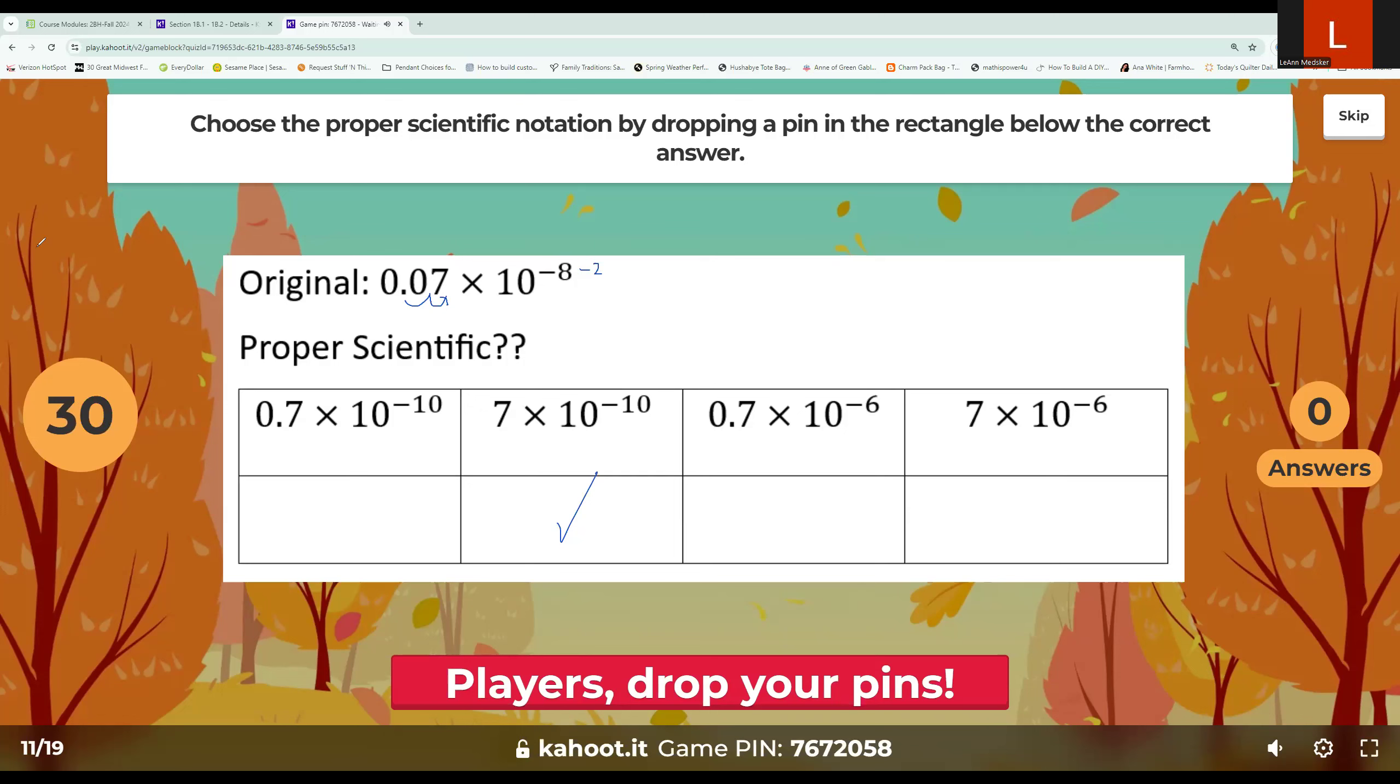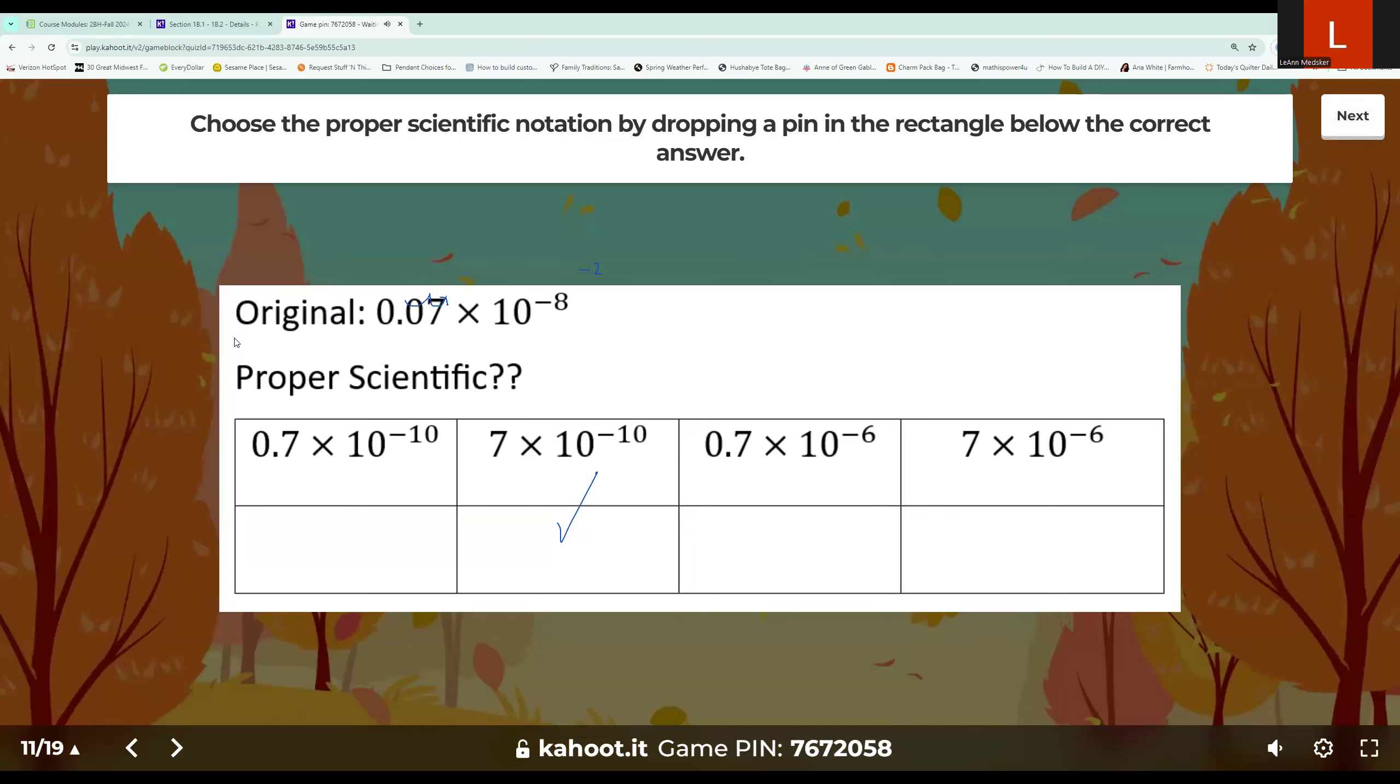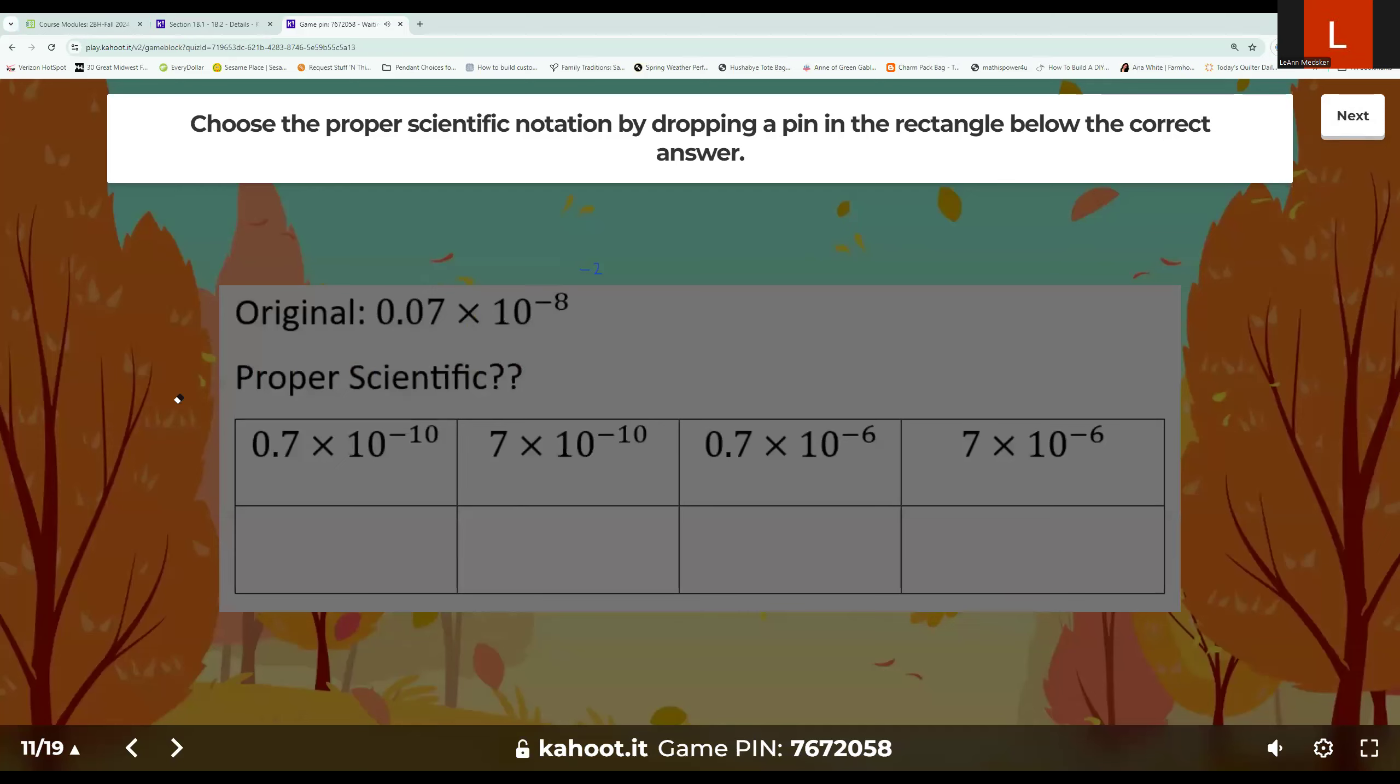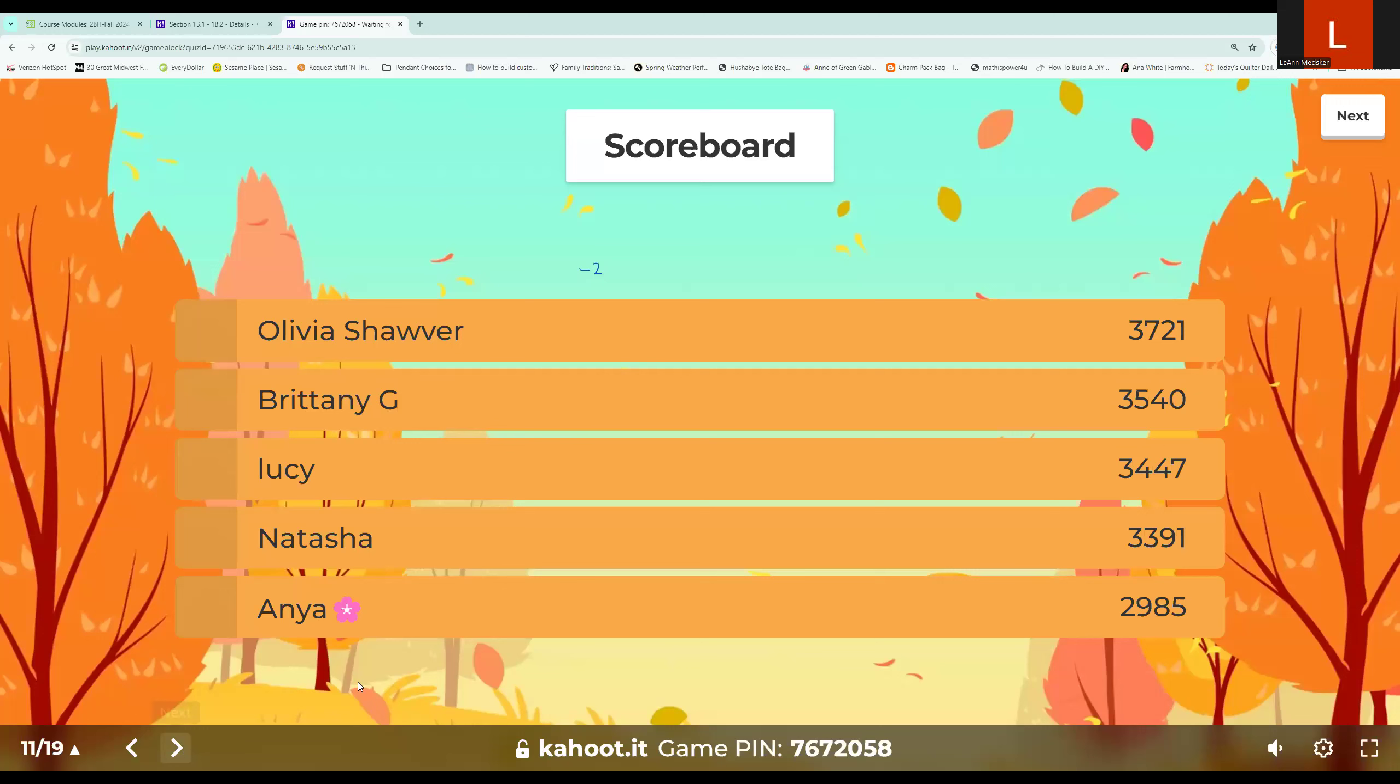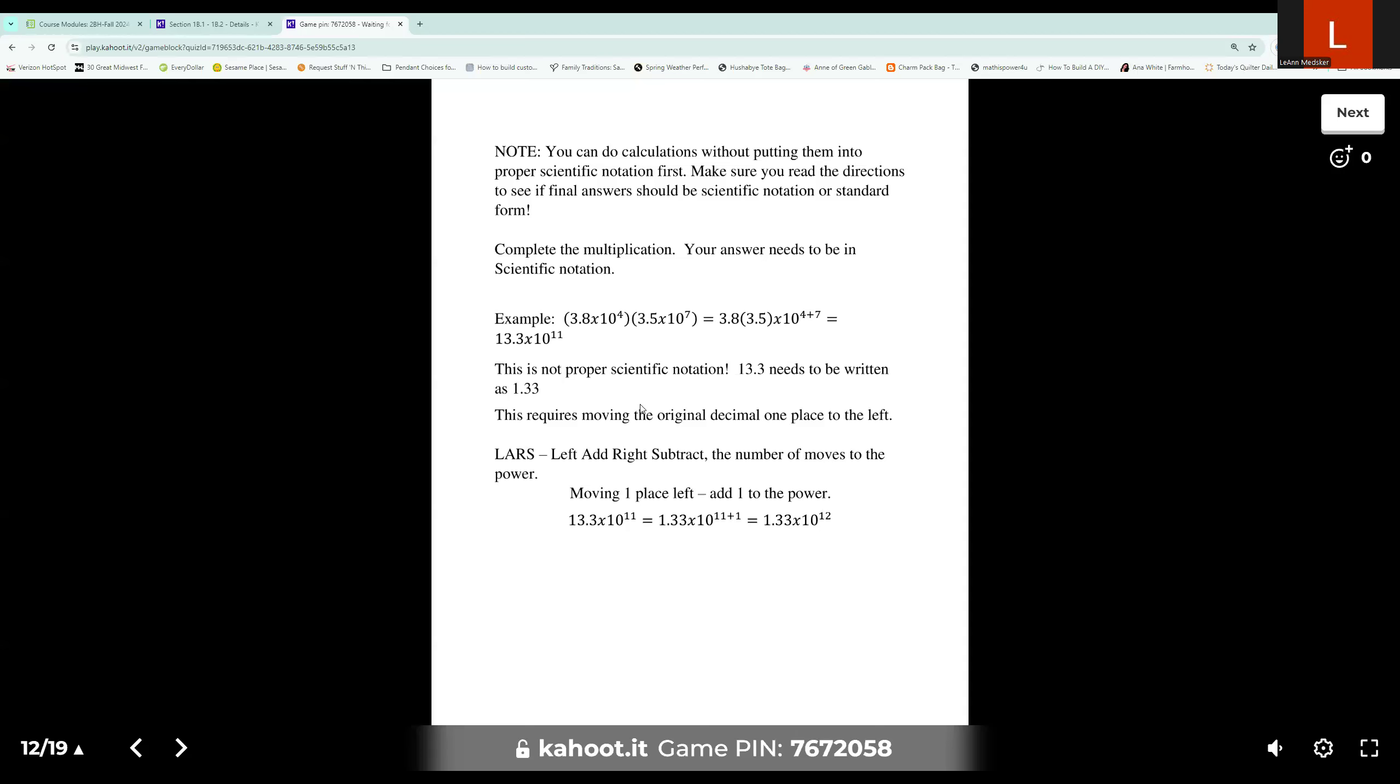That would be this choice. Just seems to be coincidence that I chose the second spot on a lot of those. So let's move on to our next piece. All right, so let's talk about doing an actual problem instead of just fixing something that's already there. So you can do calculations without putting them in the proper scientific notation first. Make sure that you read the directions to see if the final answer should be in scientific notation or standard form. So we did talk about that in class. Complete the multiplication. Your answer needs to be in scientific notation. So anytime they say in scientific notation, they mean proper scientific notation.